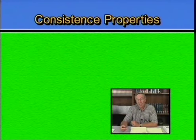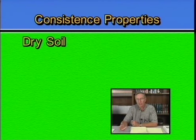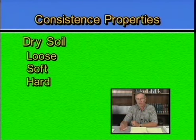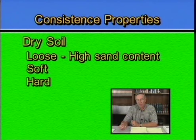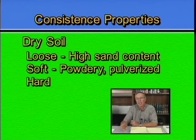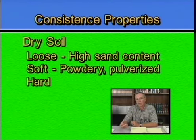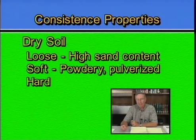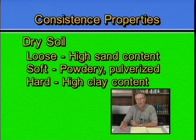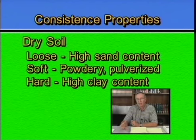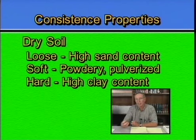If a soil is very dry, the terms used to describe its consistence are loose, soft, and hard. Loose again indicates a high sand content in the dry state. Soft soils have a tendency to powder or pulverize when subjected to a pushing or pulling force — if you take a clod and the soil is very dry, it basically pulverizes into a very powdery type of soil when broken between your fingers. Hard consistence is indicative of much higher clay content; when aggregates dry with high clay content, the clods are extremely difficult to break down due to the high cohesiveness of the clay particles holding them into a structural unit or ped.